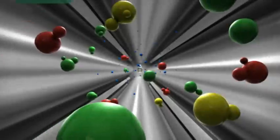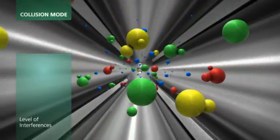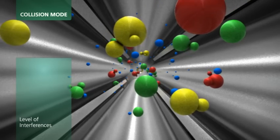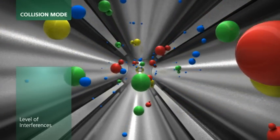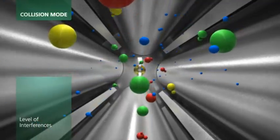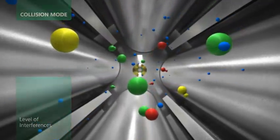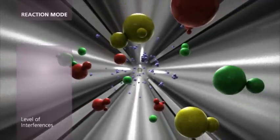Collision mode sees the introduction of a non-reactive gas into the cell that separates the smaller analyte ions from the larger interfering polyatomic ions. Collision mode is a very simple, effective way of improving detection limits in samples with low to moderate levels of interferences. When the level of interferences is high, dynamic reaction mode provides the best detection limits.